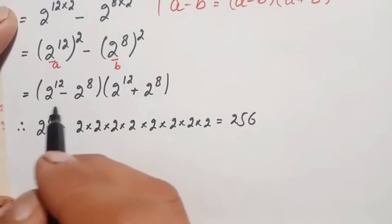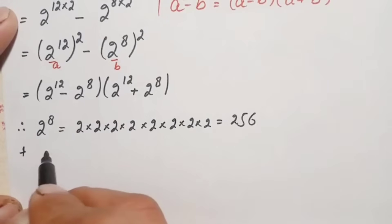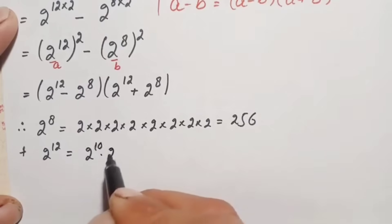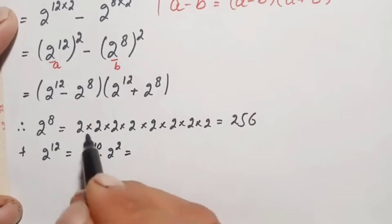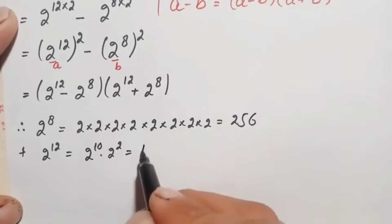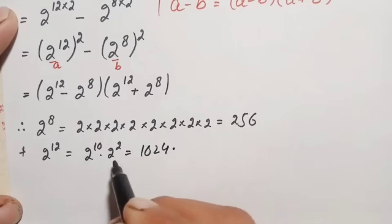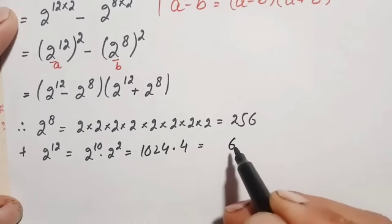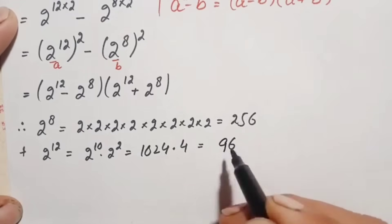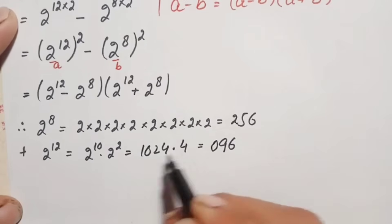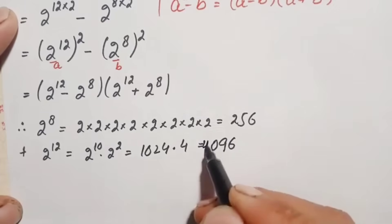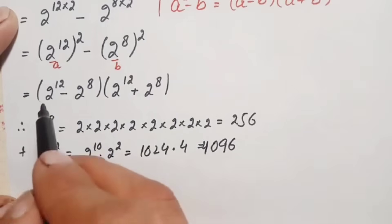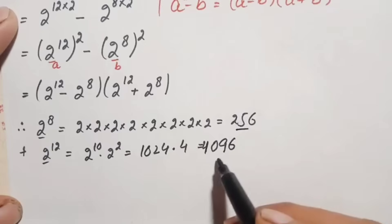Next we find 2^12 by writing it as 2^10 × 2^2. Since 2^10 = 1024 (a well-known value) and 2^2 = 4, we multiply: 1024 × 4. That gives us 4×4=16 (carry 1), 4×2=8+1=9, 4×0=0, 4×1=4 — so 2^12 = 4096.